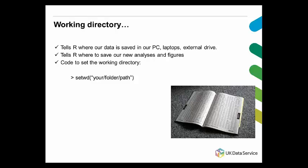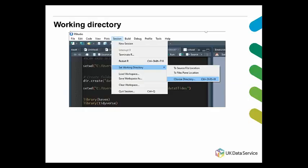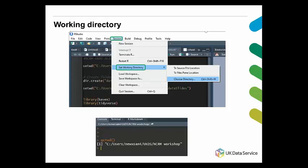How do we tell R where our working directory is? We can use the function setwd() followed by the path on your computer where the folder is. Or we can use an easier way — just go to the Session tab on the main window of RStudio, then Set Working Directory, and then choose the directory that we want.